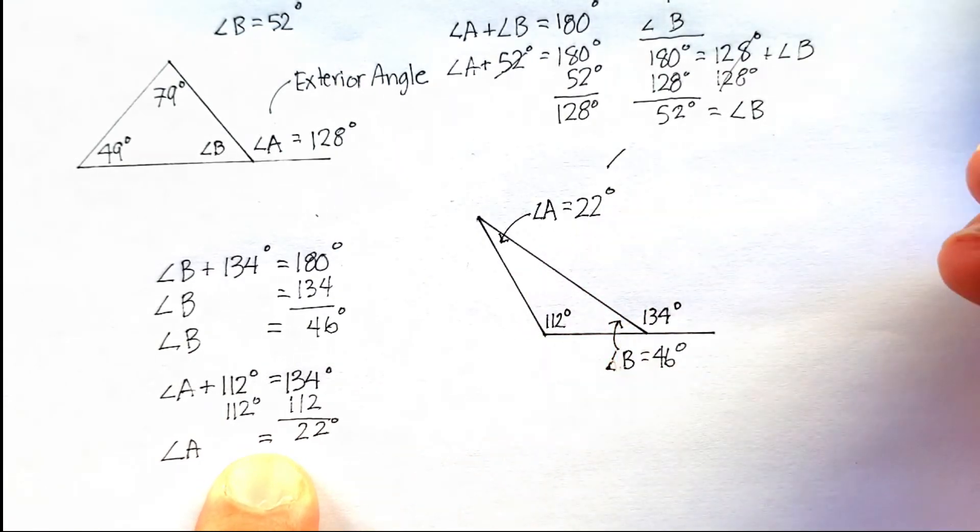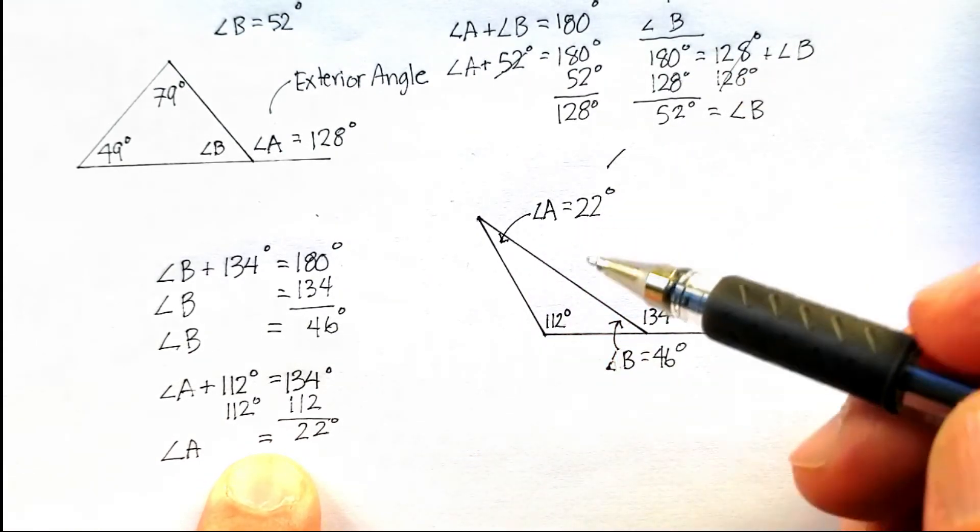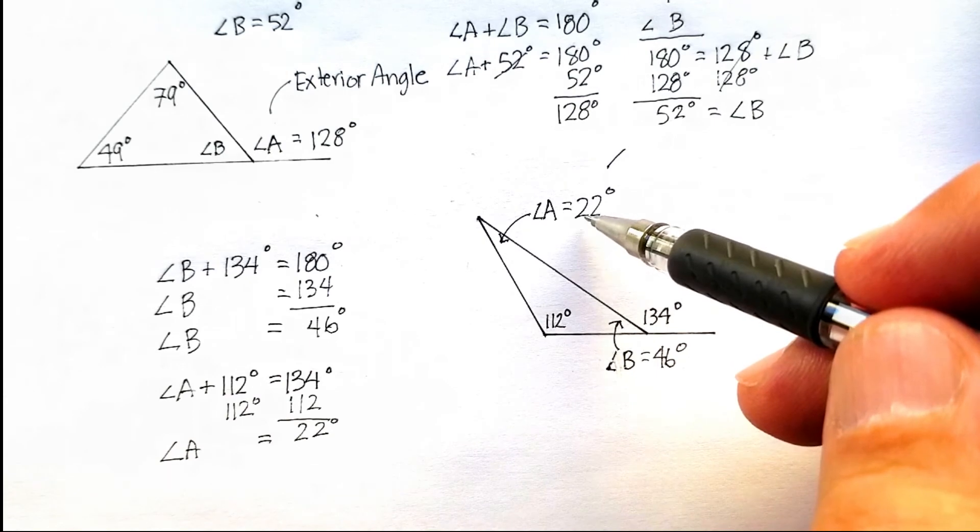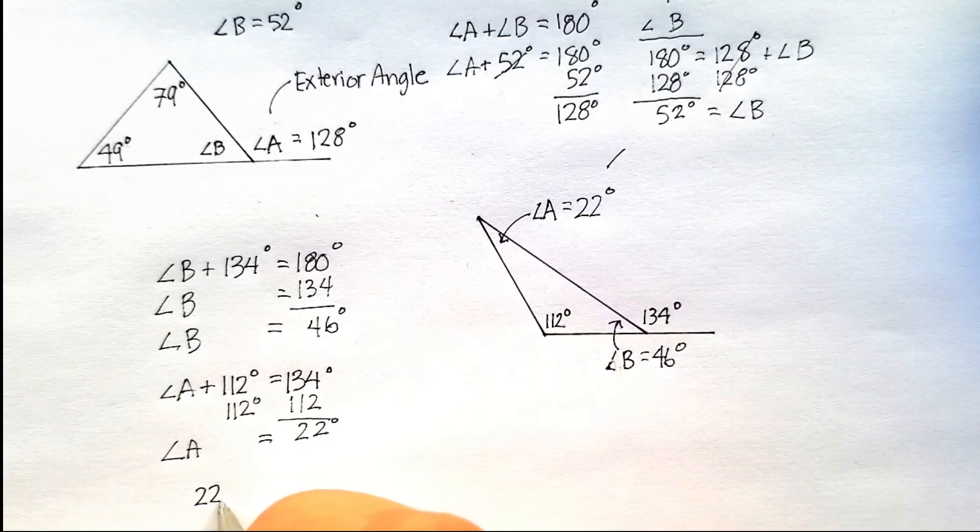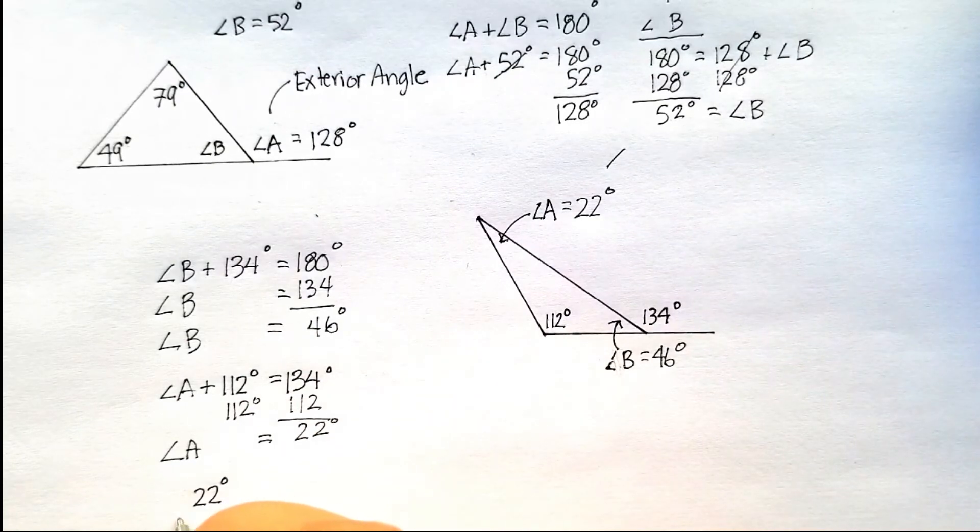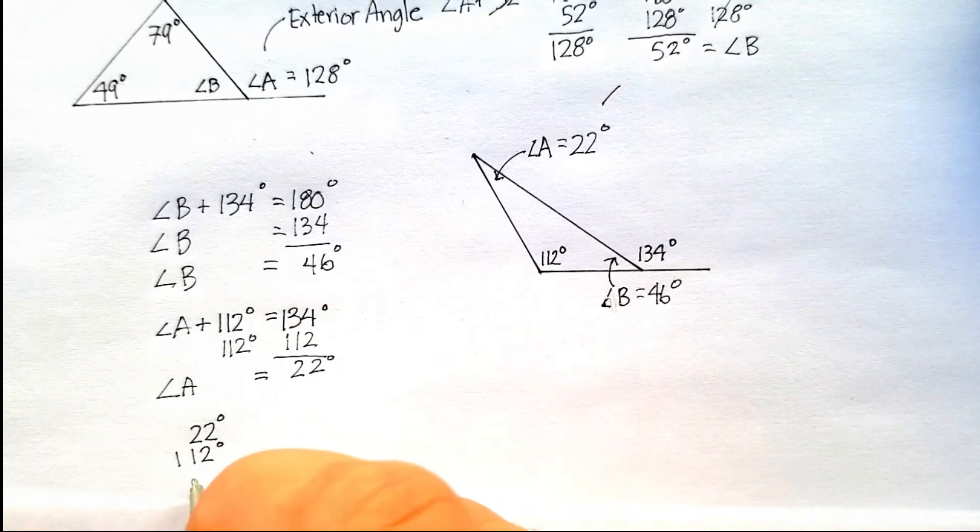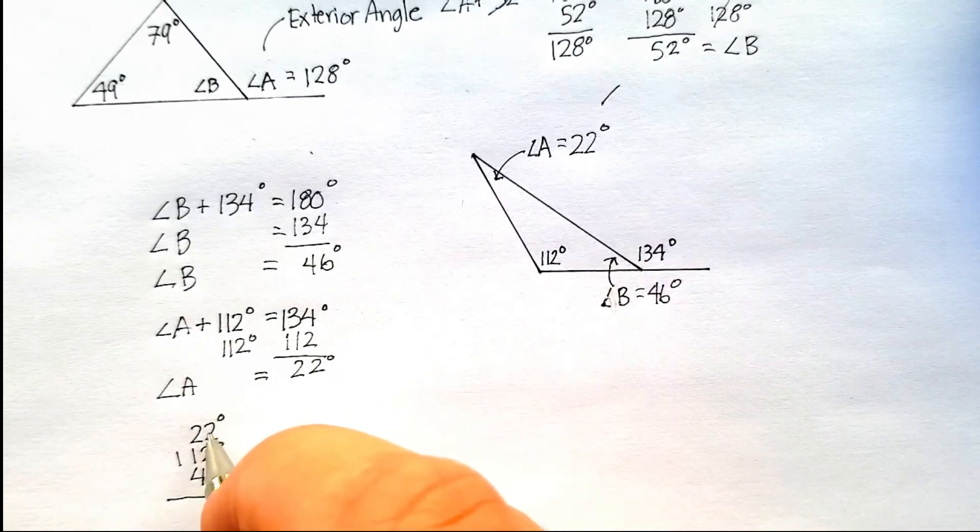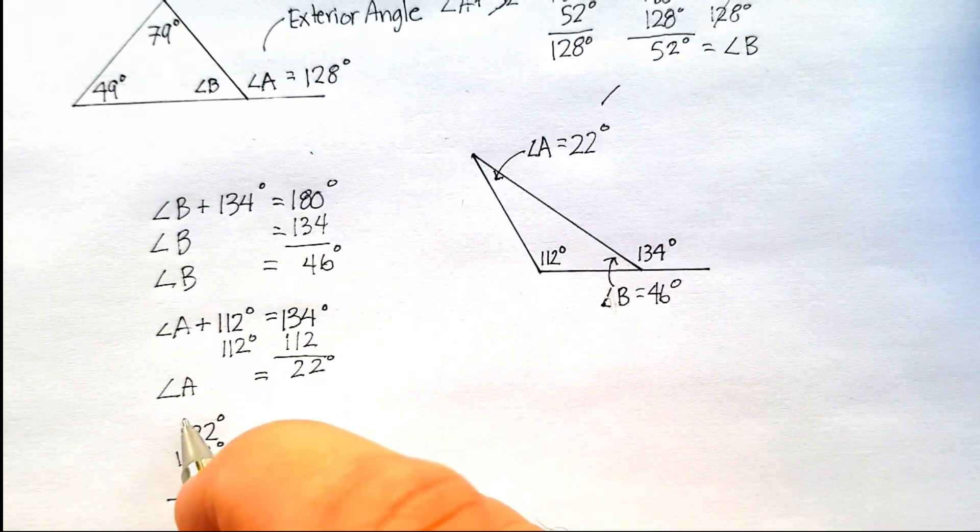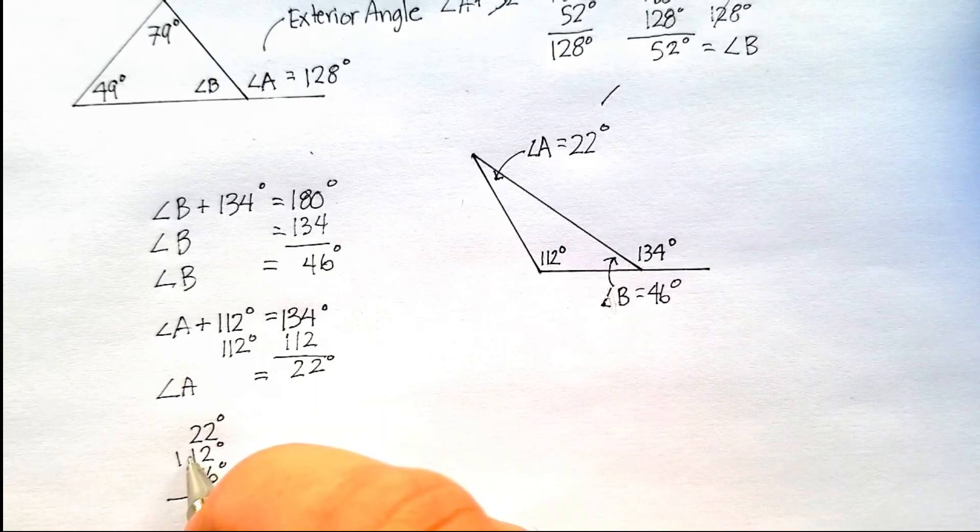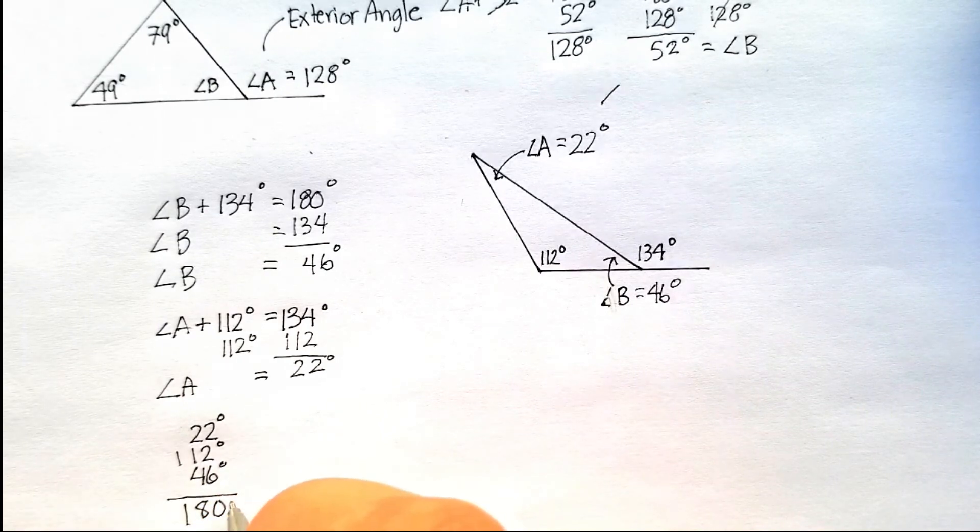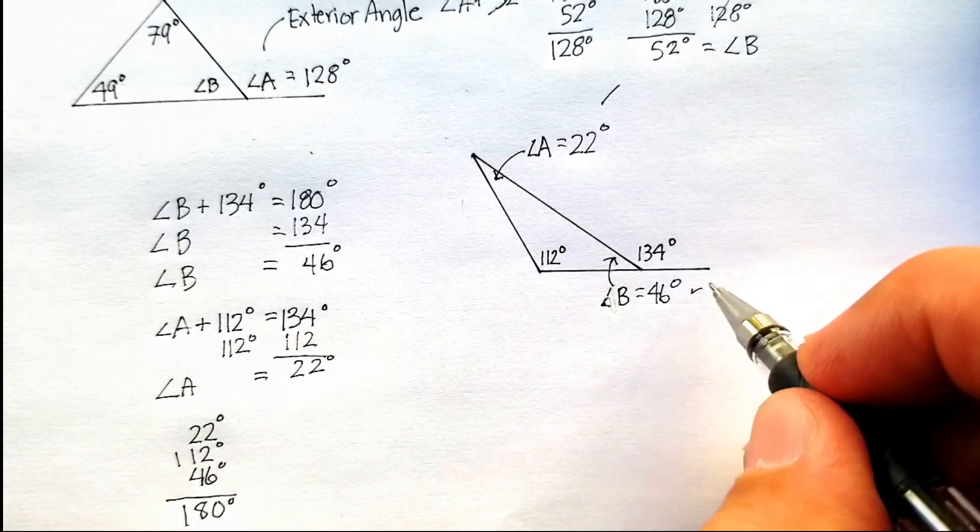Now there's one last check that we can have. We know that the three angles in a triangle should be equal to 180. So let's add up 22 plus 112 plus 46. And we know that that should equal 180. Let's see if it does. 2 and 2 is 4. 6 is 10. Carry the 1. 1, 3, 4. 4 is 8. 180 degrees. So each one of these is correct.